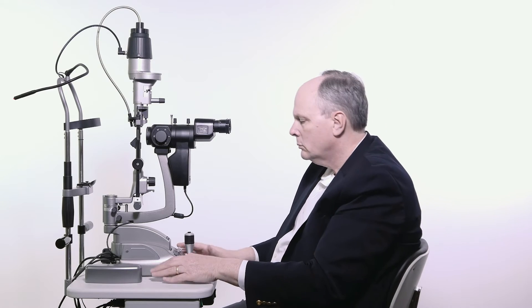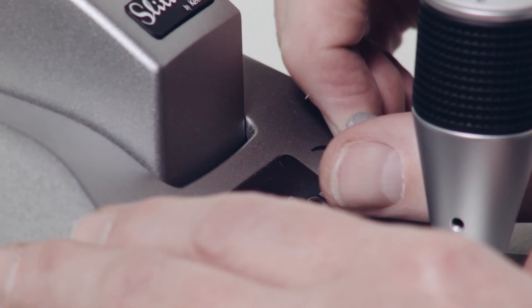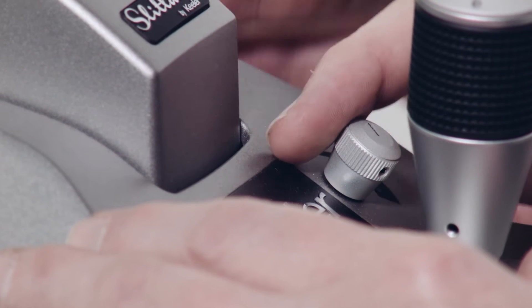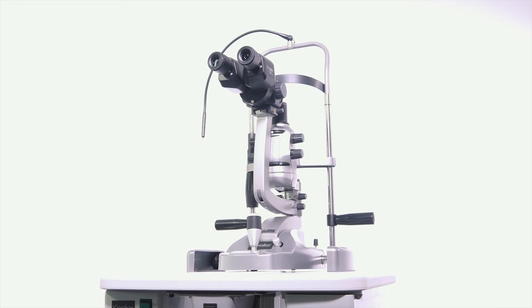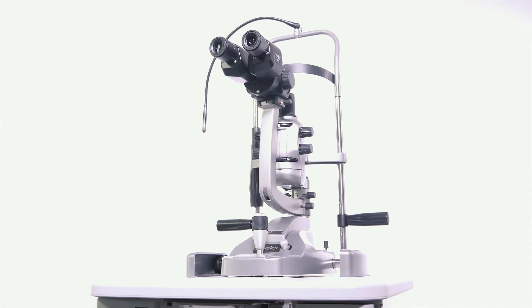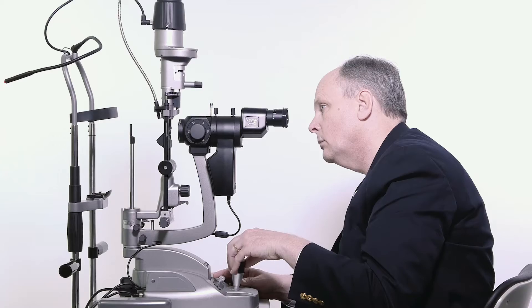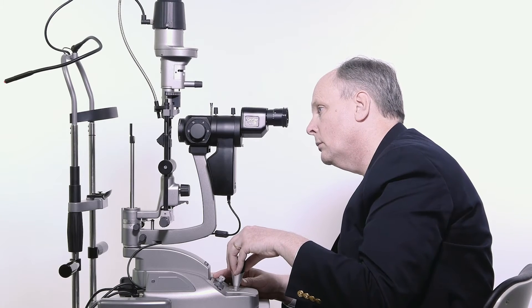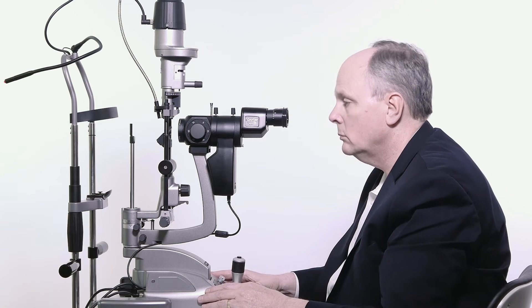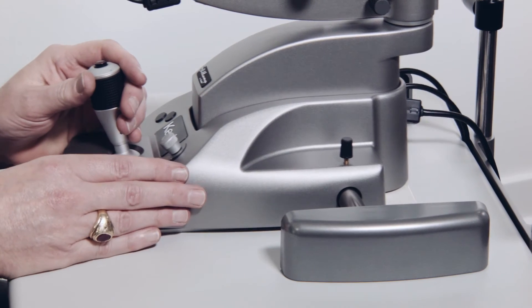Switch on illumination using the main power switch. Adjust illumination using the rheostat near the joystick. The Q series slit lamp offers LED illumination. Rotate the joystick until the light beam is at eye level. Move the slit lamp towards the patient until the slit beam is focused on the cornea.